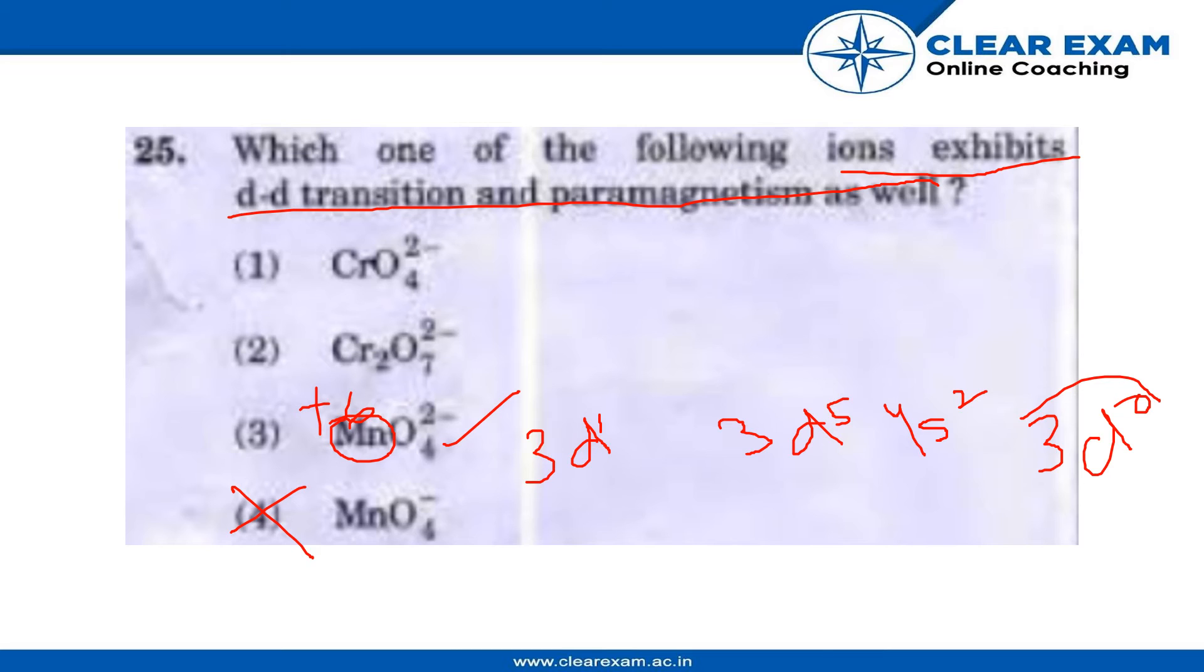In CrO4 2-, the oxidation state of Cr is +6. With the outer electron configuration being 3d0, this has no unpaired d electron, hence no d-d transition.